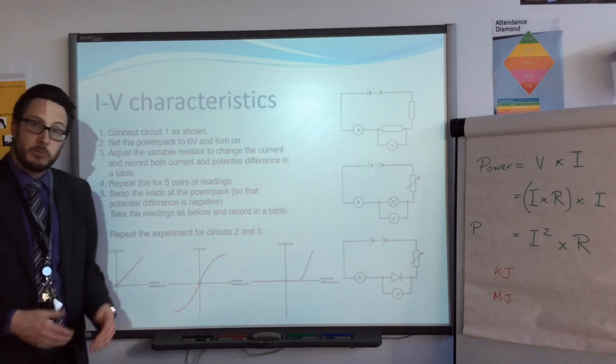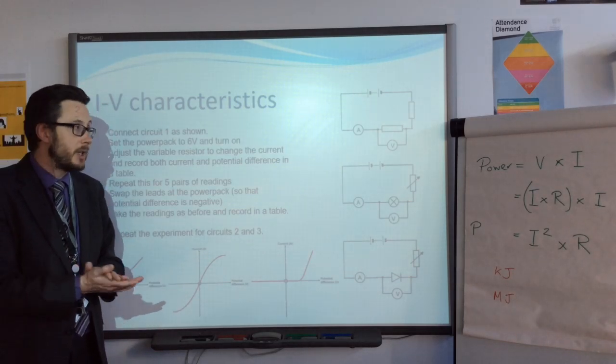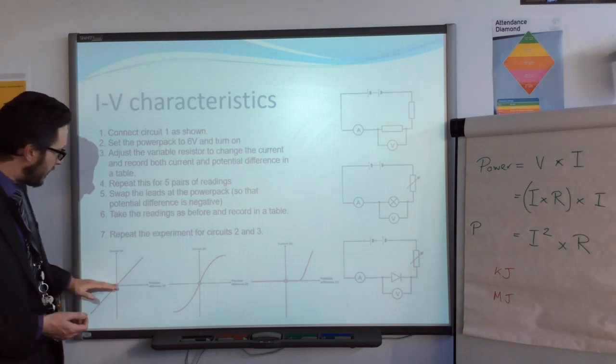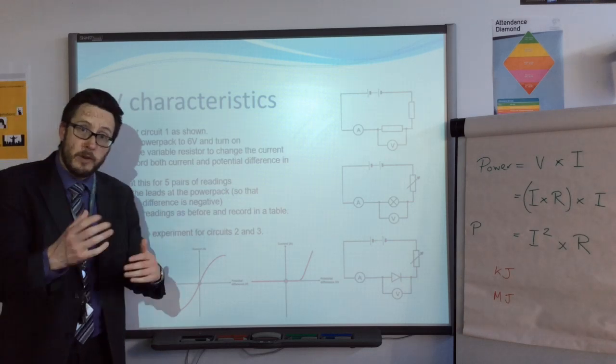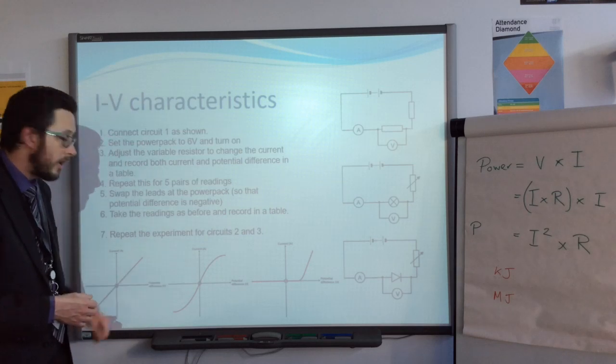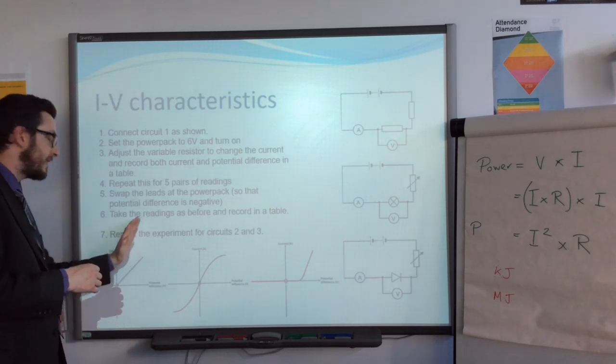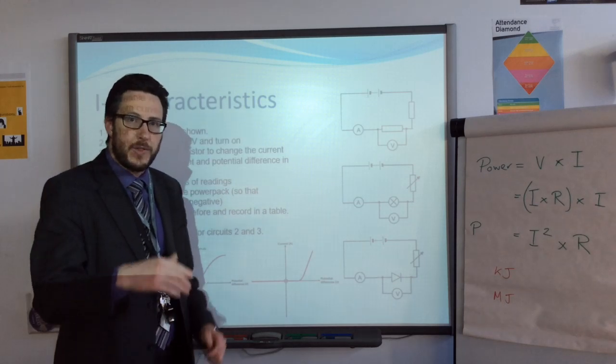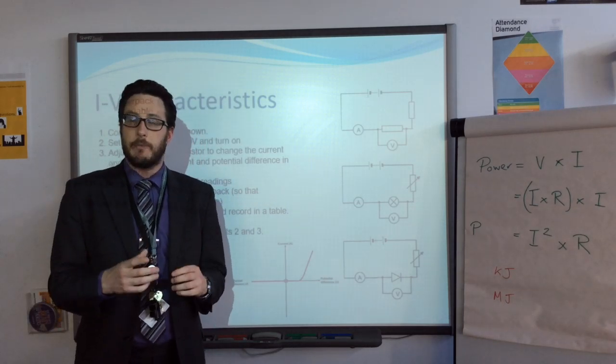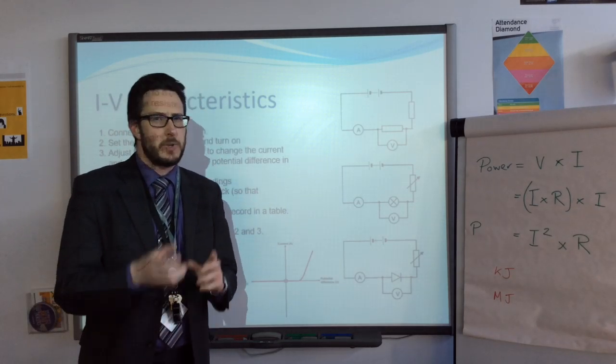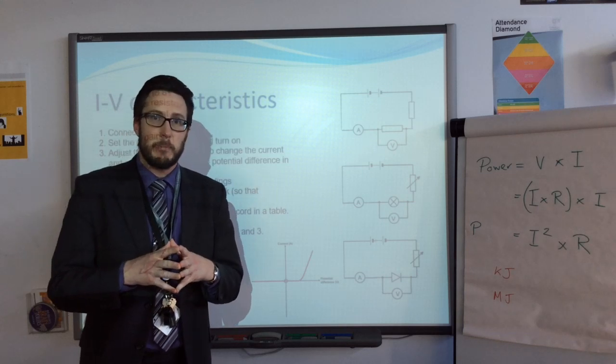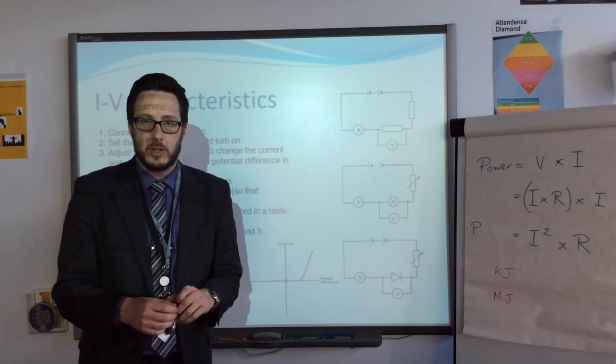If the resistance was higher, if it was a higher resistance in the resistor, the line would be shallower. Higher resistance means a shallower line, whereas lower resistance means a steeper line. That can be important for things like LDRs, which are light-dependent resistors, or thermistors, which are resistors which change their resistance based on temperature.